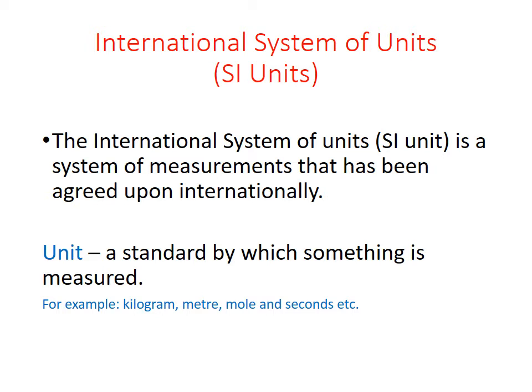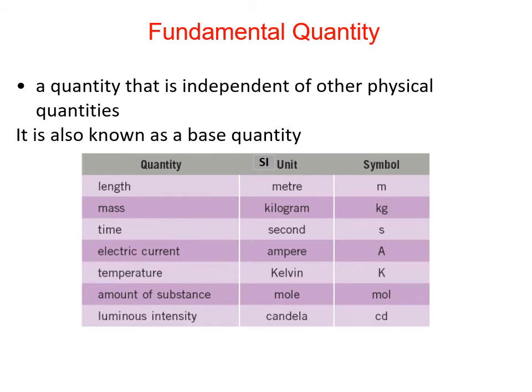There are two main types of physical quantities: fundamental quantities and derived quantities. A fundamental quantity is simply a quantity that is independent of other physical quantities. It is also known as a base quantity. This means we cannot express fundamental quantities using other physical quantities — they are the basic or base quantities.